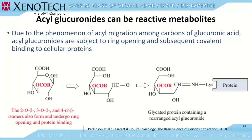The first mechanism involves acyl migration. The acyl group migrates from its original position at carbon-1 to carbon-3, predisposing the structure to transient ring opening. This transient ring opening is followed by formation of a bond between carbon number 1 and, in this case, the amino group of a lysine residue. This is the structure responsible for adducts of glucuronide to cellular proteins.